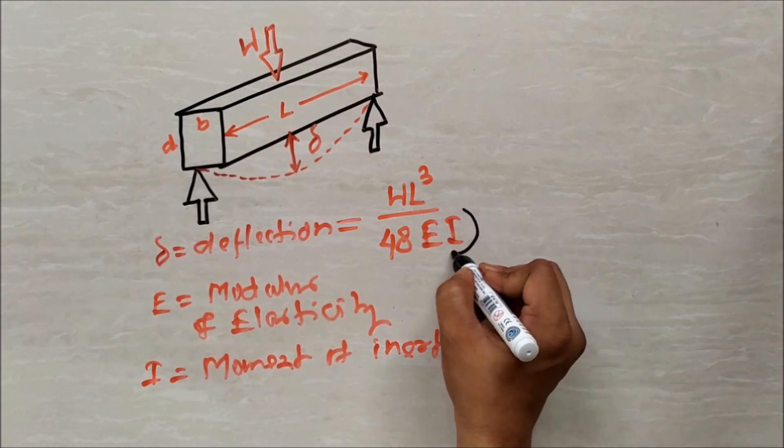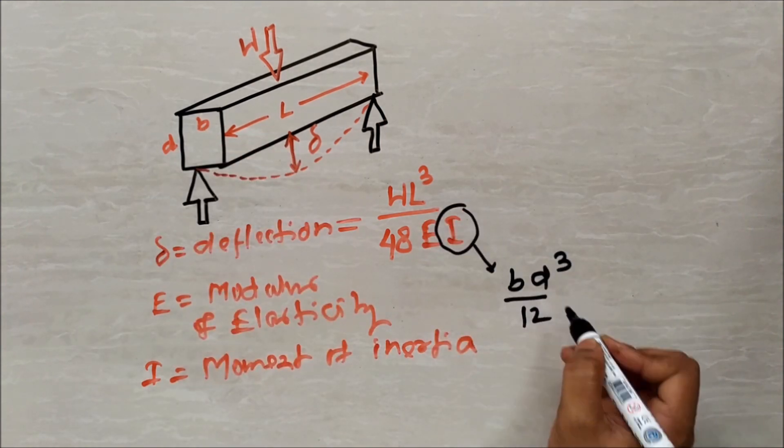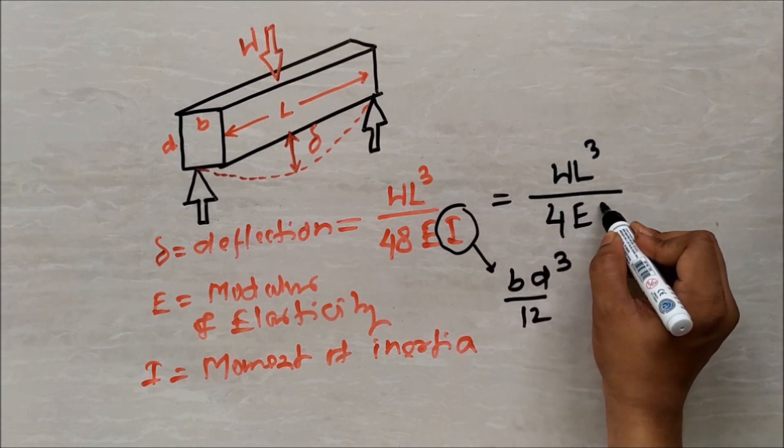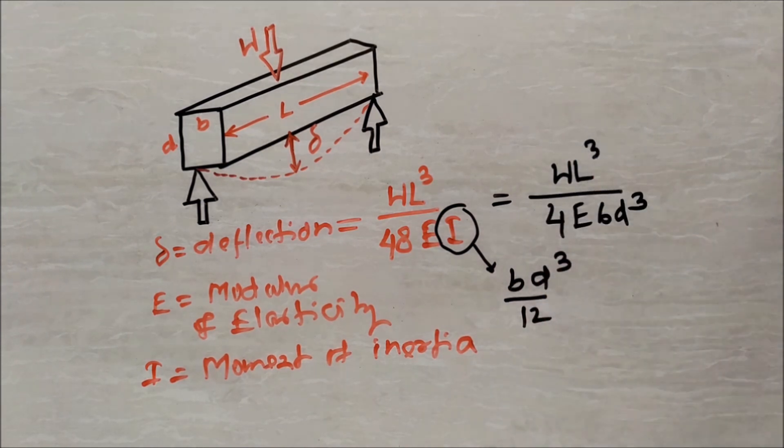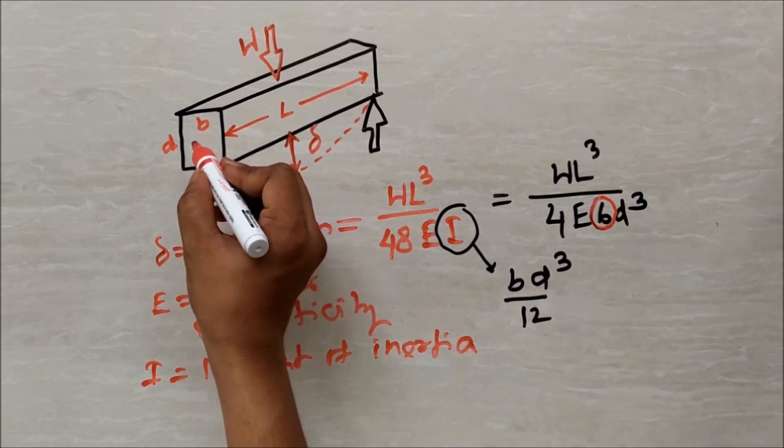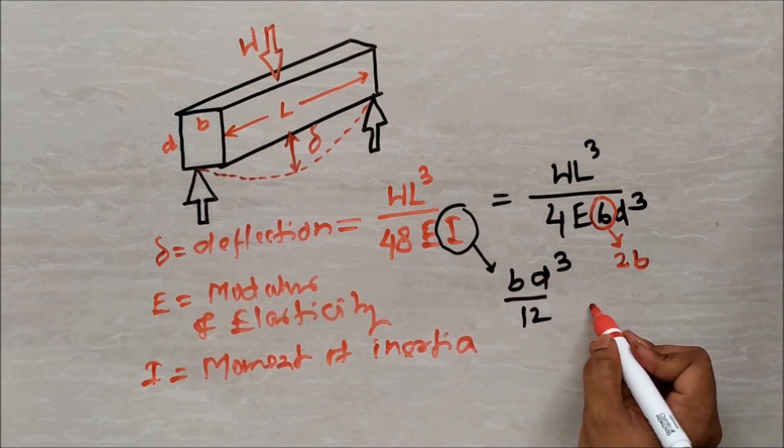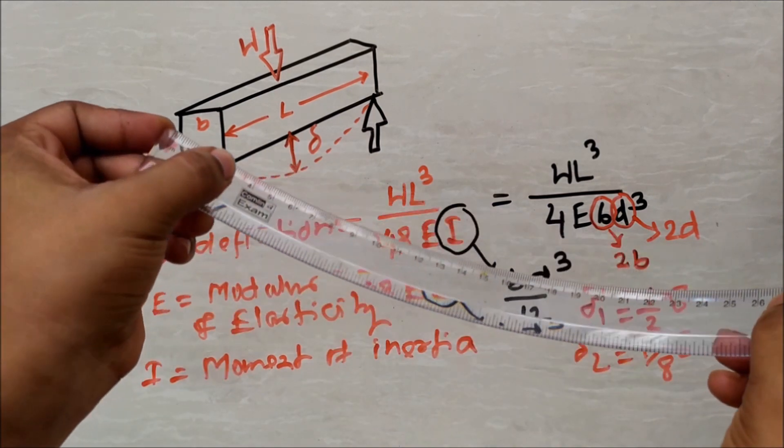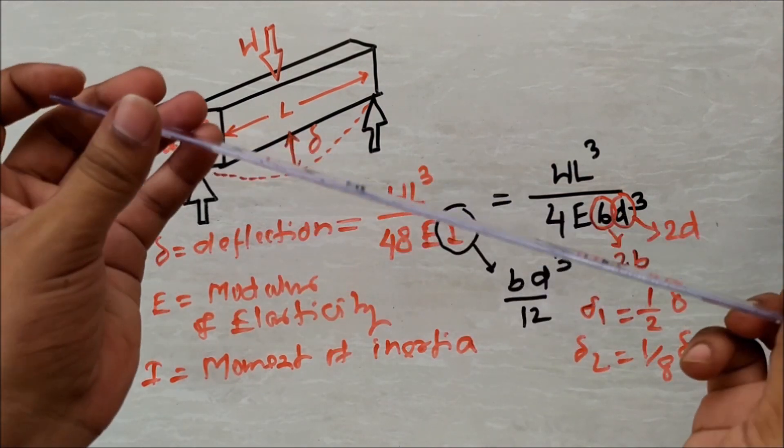For a rectangular section, I is equal to BD cubed divided by 12. By simplifying the formula, we get delta equals to WL cubed divided by 4E BD cubed. In this formula, we can clearly understand that if we increase the width by 2 times, the deflection will be half of the previous deflection. But if we increase the depth by 2 times, the deflection will be surprisingly 1/8th of the previous deflection. That's why depth is more important than the width of the beam.